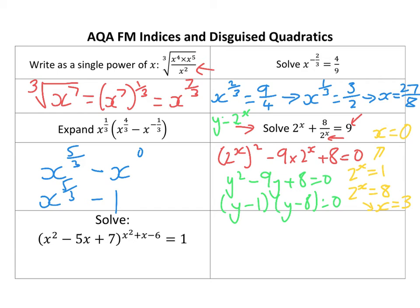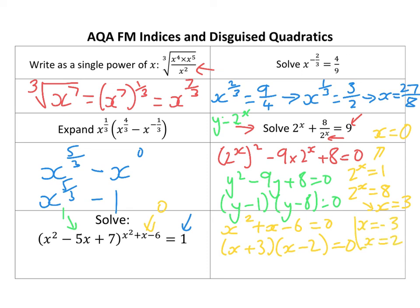Now with this one, in order to get an answer of 1, either this part is going to be 0 or this part is going to be 1. So I'm going to actually solve 2 quadratics. The first one: solve x squared plus x minus 6 equals 0, which gives me x plus 3 times x minus 2 equals 0. So that gives me x equals minus 3 and x equals 2. Alright, so there's 2 solutions.